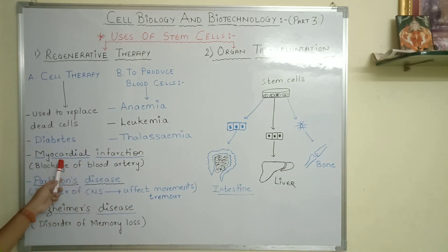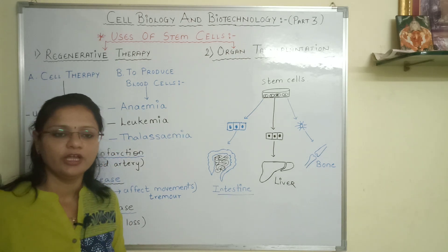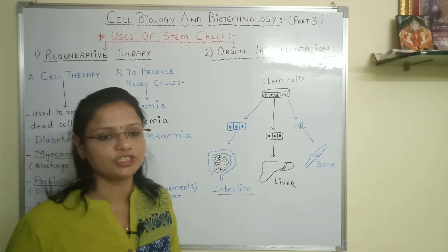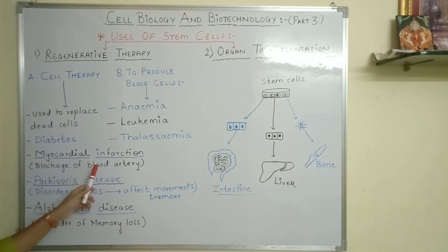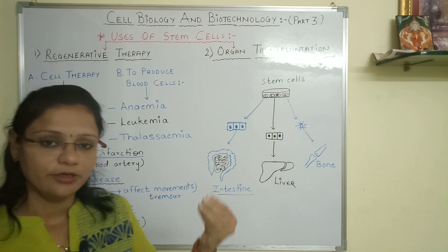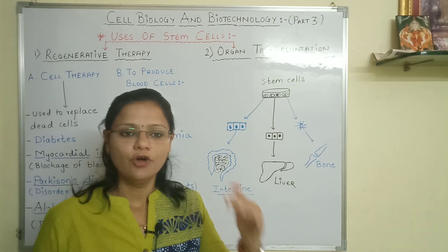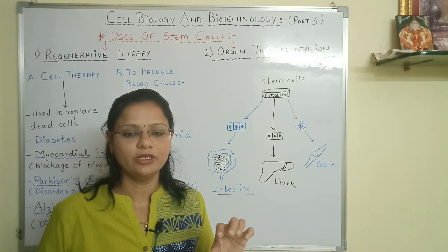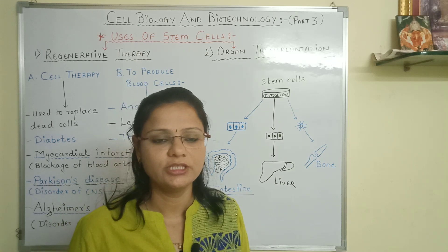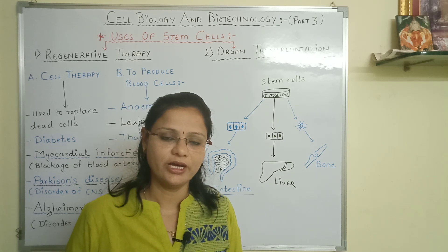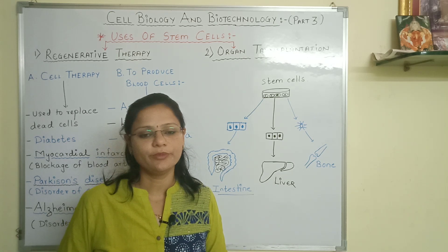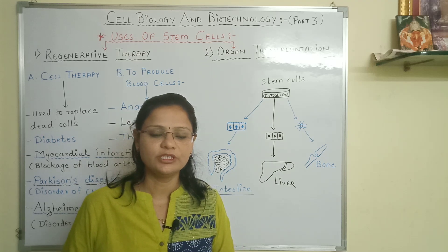Next is myocardial infarction. What is myocardial infarction? In general terms, it is a heart attack. In myocardial infarction, the blood vessels that supply blood to the heart get blocked, which causes the blood supply to the heart to be affected. We can replace those damaged cells with stem cells.